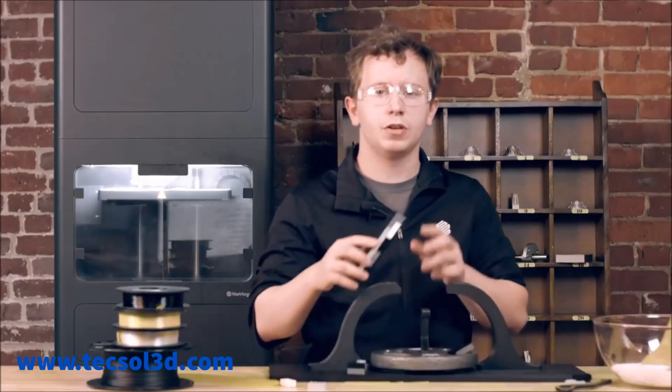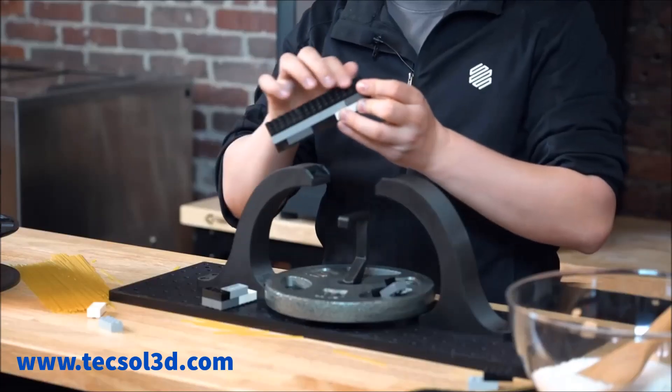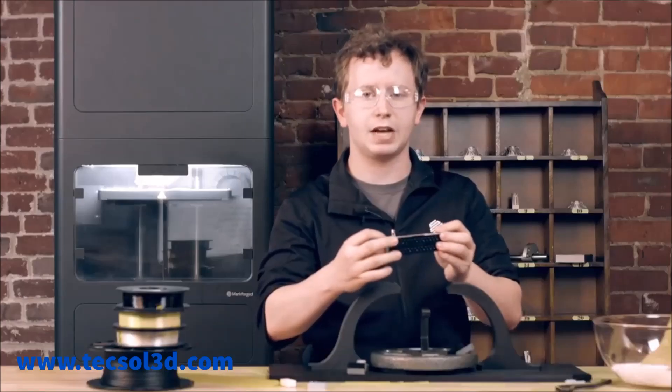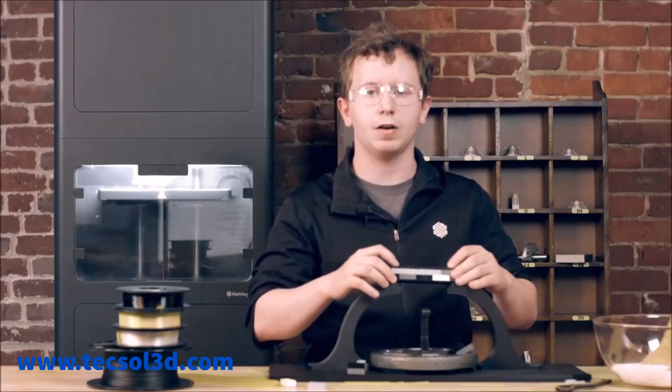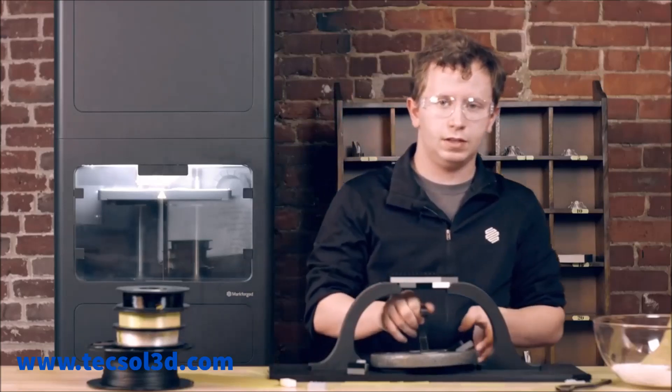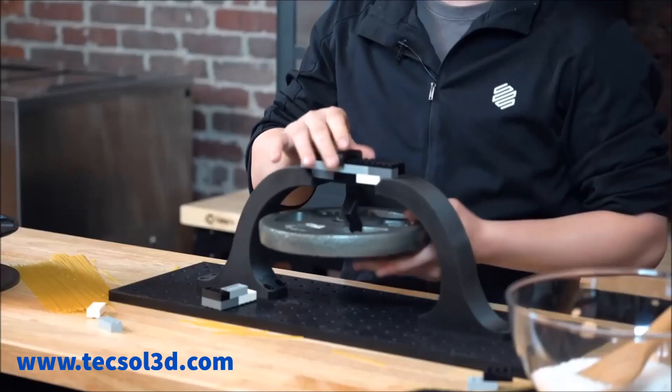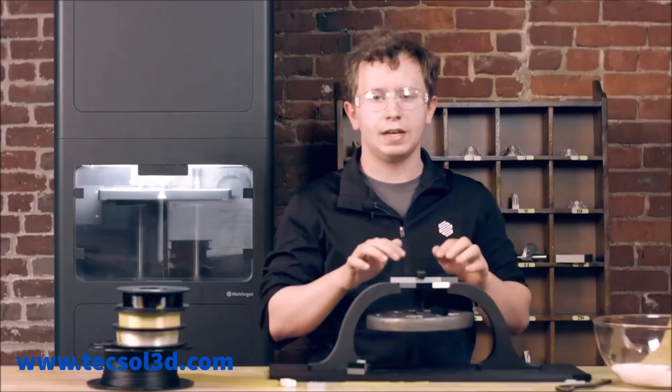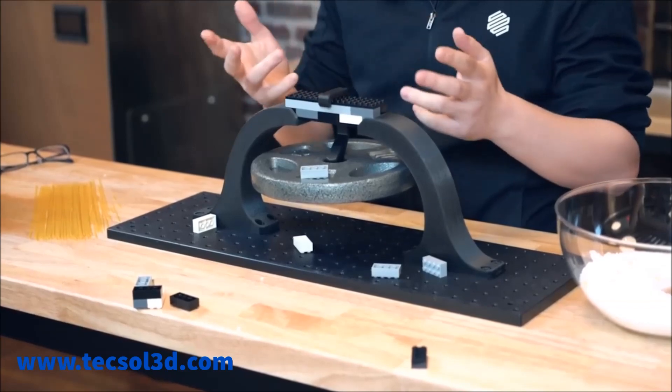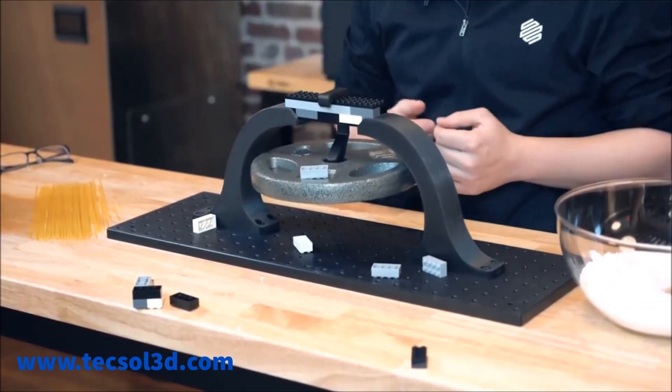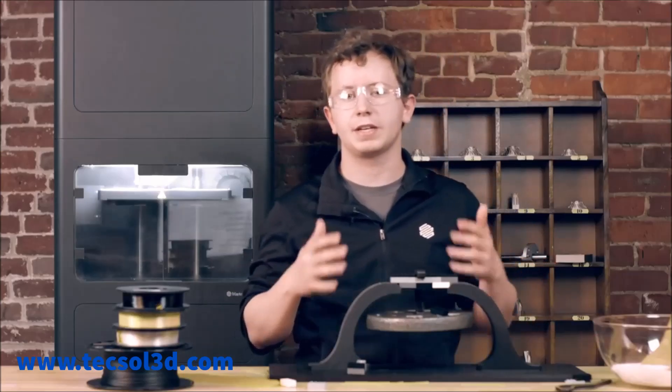When we apply this same load to a part with continuous segments spanning the load paths—in this case the top and bottom plates of the part—the chopped segments act as a filler or a matrix material, and the load holds because it's being distributed across the loading surfaces by the continuous reinforcement.